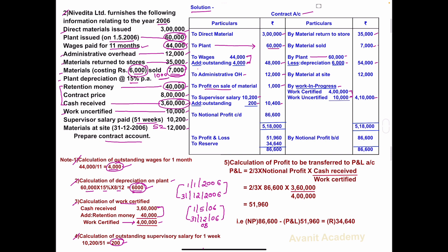The last transaction: materials at site on 31st December 2006 — this is closing material, amount 12,000. Write on the credit side: by material at site, 12,000. Now add the credit side: 35,000 plus 7,000 plus 54,000 plus 12,000 plus 4,10,000. Total credit side: 5,18,000.